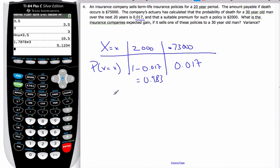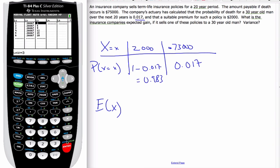So if I want to find the expectation, the expectation is simply I'm going to go to my calculator. I'll edit here. I'm going to move over to L1 clear it. Move over to L2 go on top of L2 hit clear and enter and I'm going to go 2000, negative 73,000, and my probabilities are going to be 0.983.